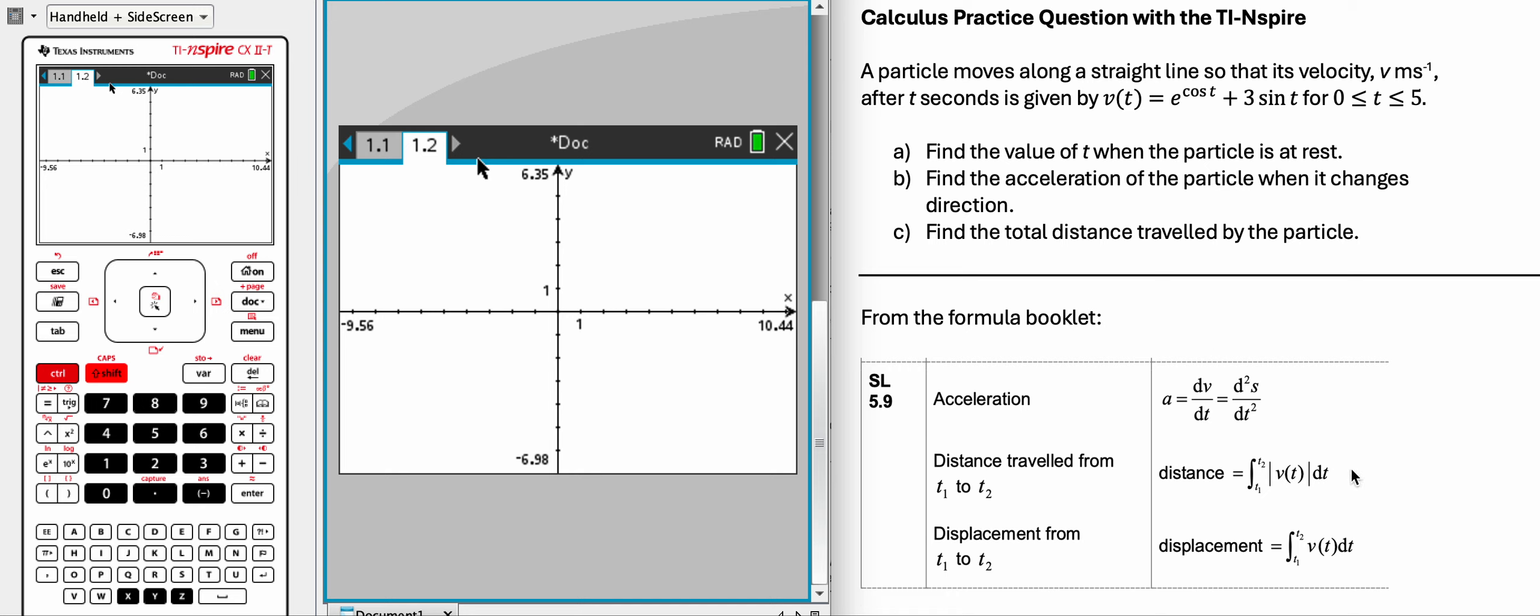Now, this is from the IBDP formula booklet, so I assume that you would have known that this is what you'd have to look for, so I included it in there for you.